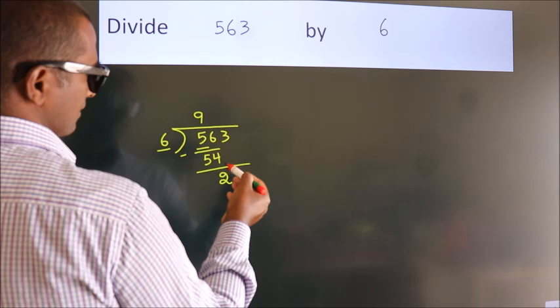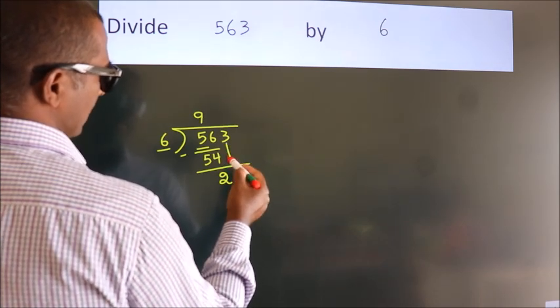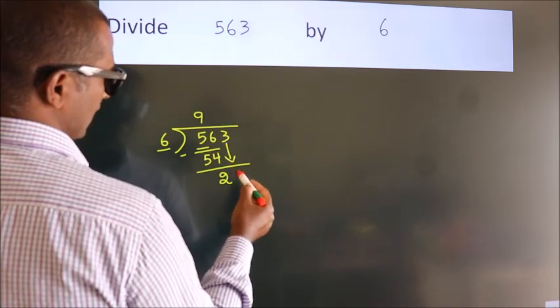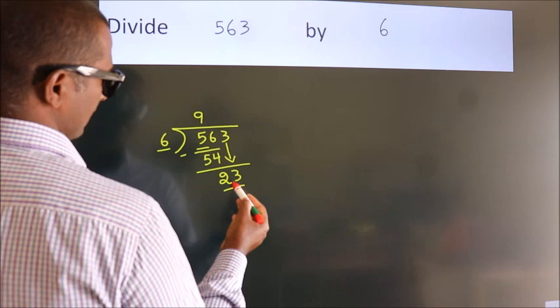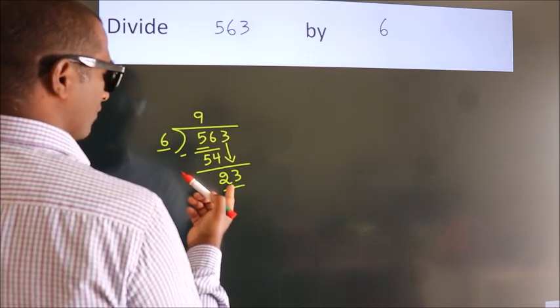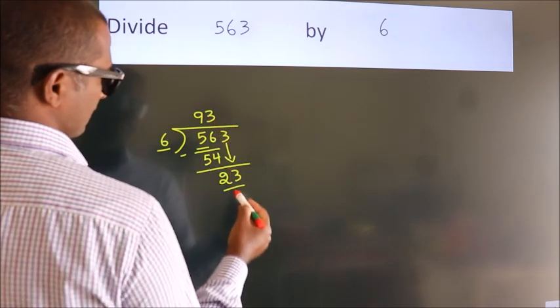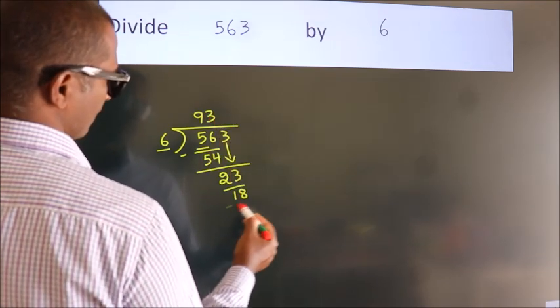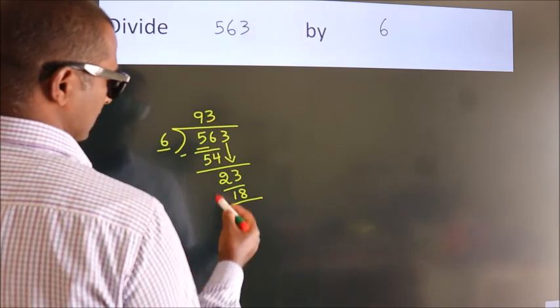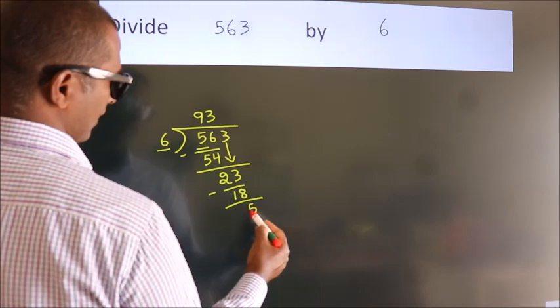After this, bring down the beside number. So 3 down. So 23. A number close to 23 in the sixth table is 6 threes 18. Now we subtract. We get 5.